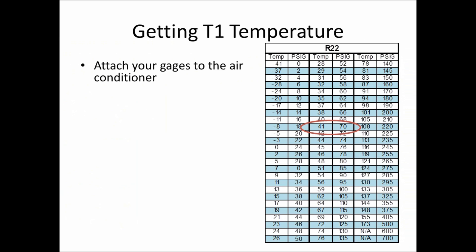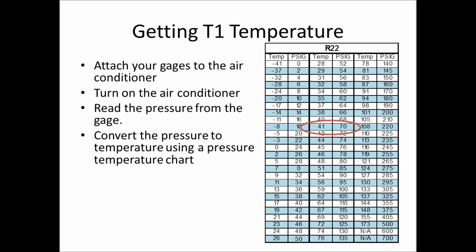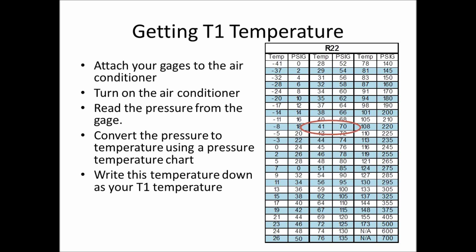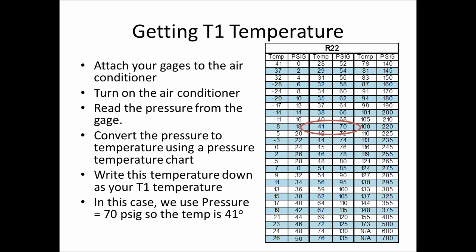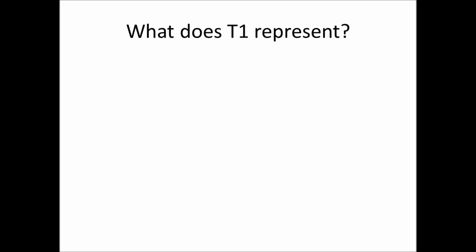Getting T1 is fairly easy. You attach your gauges to the air conditioner, make sure it's on, running, and has settled down. You read the pressure from your low pressure gauge and convert that on your pressure-temperature chart. In this example we're looking at 70 psig, which represents a temperature of 41 degrees — that's your T1 temperature.